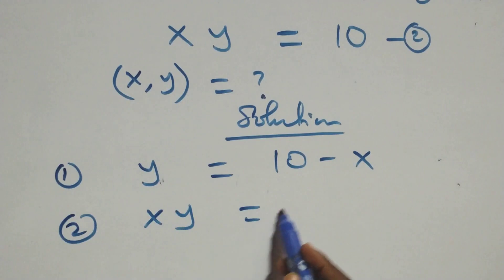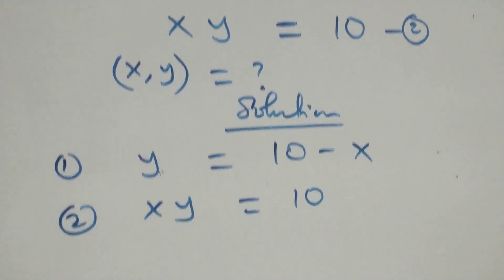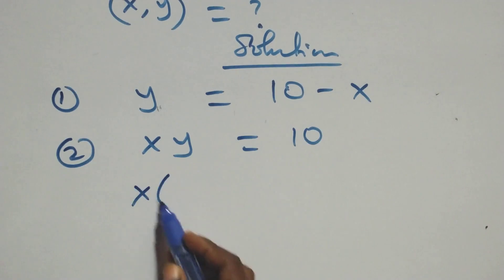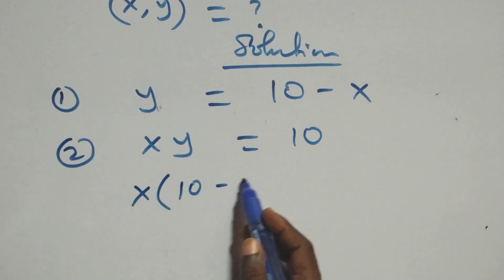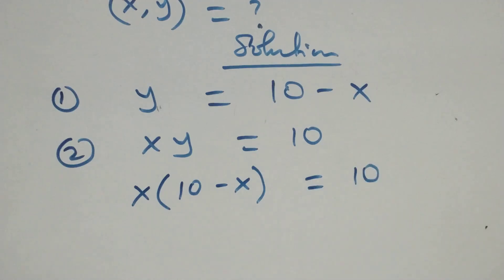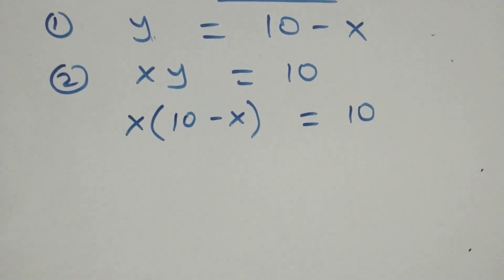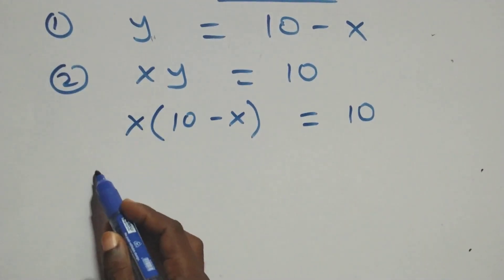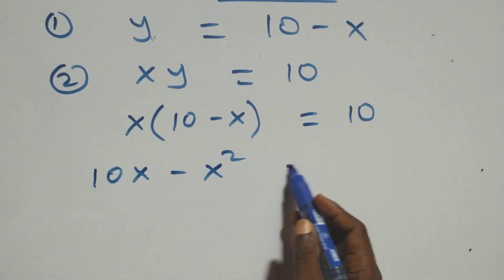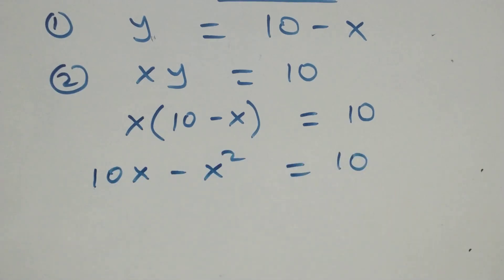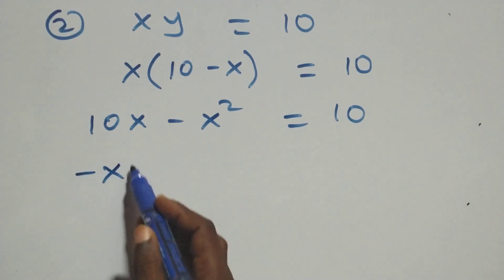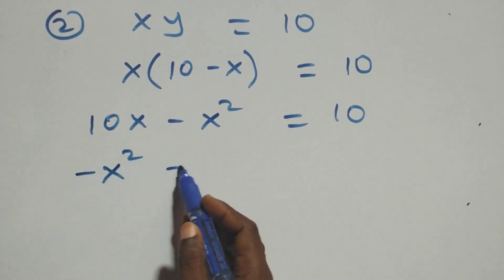From equation 2, which is x times y equals to 10, we substitute the value of y. This becomes x times (10 minus x) equals to 10. We open the bracket and we have 10x minus x squared equals to 10.